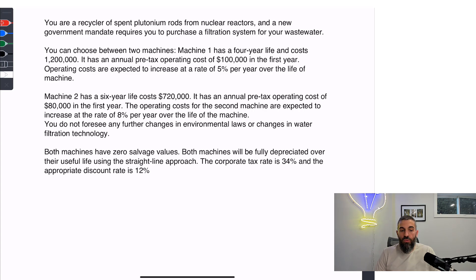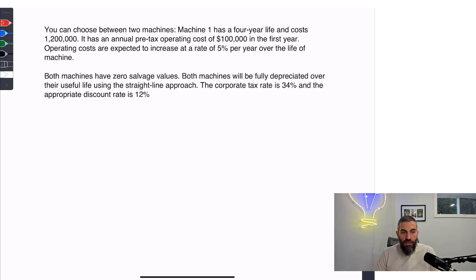In order for you to decide which machine should be chosen, we need to start by finding the net present value of each one. Let's begin with machine number one. You're told that the machine is going to cost $1.2 million and then cost $100,000 in the first year and then 5% more each year. So in the first year, the operating cost is $100,000 before tax. If we multiply that by one minus the tax rate, we get an operating cost after tax of $66,000.